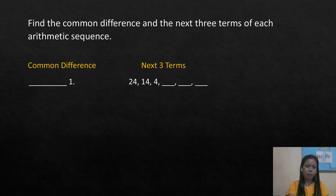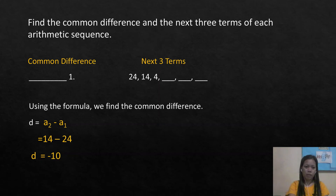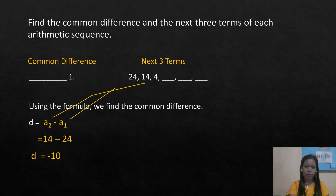Here is another example: find the common difference and the next three terms of the arithmetic sequence 24, 14, 4. Using the formula, d equals a₂ minus a₁. Our second term is 14 and our first term is 24, so 14 minus 24 equals negative 10. Our common difference is negative 10.